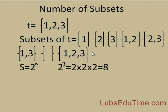Every set is a subset of itself — always remember that. So if you have {a, b, c}, then {a, b, c} is a subset of itself, and you also have the empty set. The first six subsets of T are called proper subsets, and the last two — the empty set and the set itself — are called improper subsets.